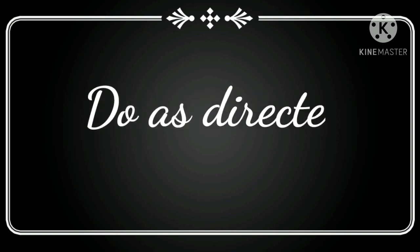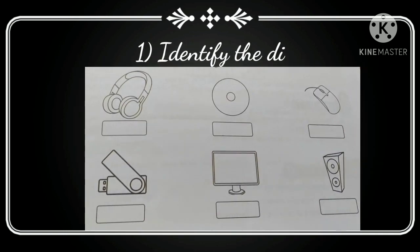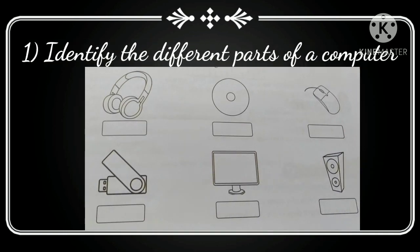Open your book. See it is written, do as directed. So we will do according to the instructions given. Number 1: identify the different parts of a computer. Look at the first picture. This is the picture of a headphone. Beside the headphone we have the CD. Next we have the mouse. In the next row we have the pen drive. Beside the pen drive, the monitor and the speaker.